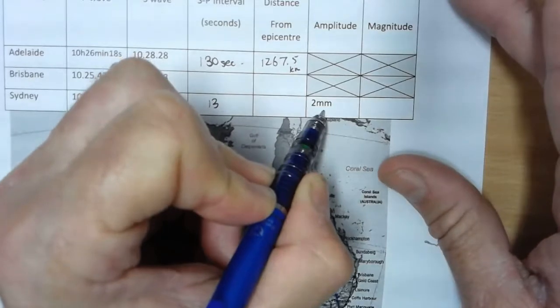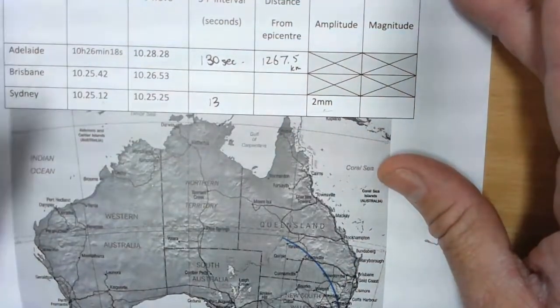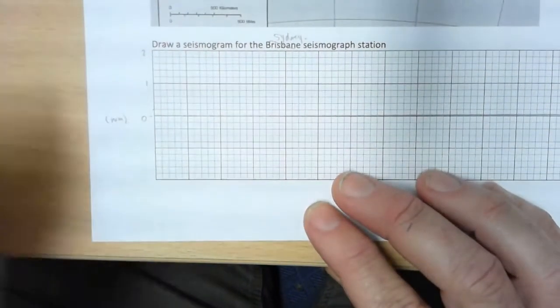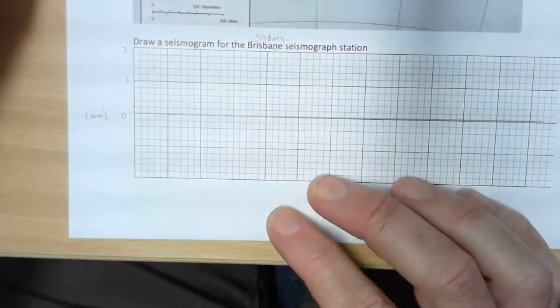We also need to know what the amplitude is, which is 2 millimeters. So with that in mind, we can go ahead to our seismogram or our graph paper.